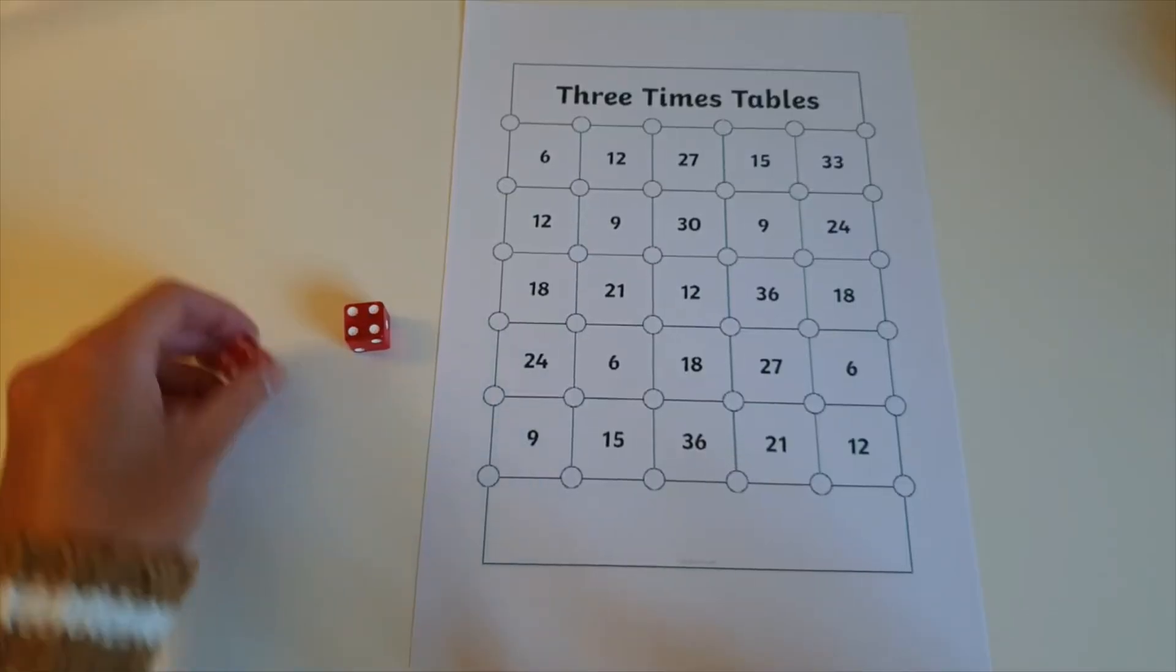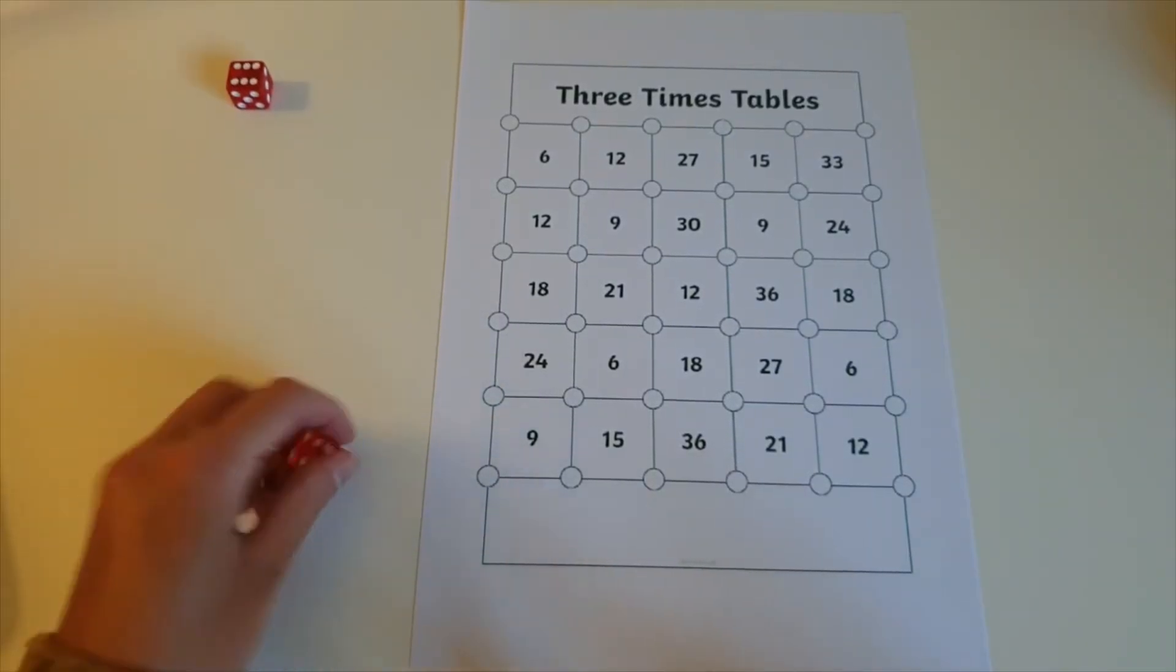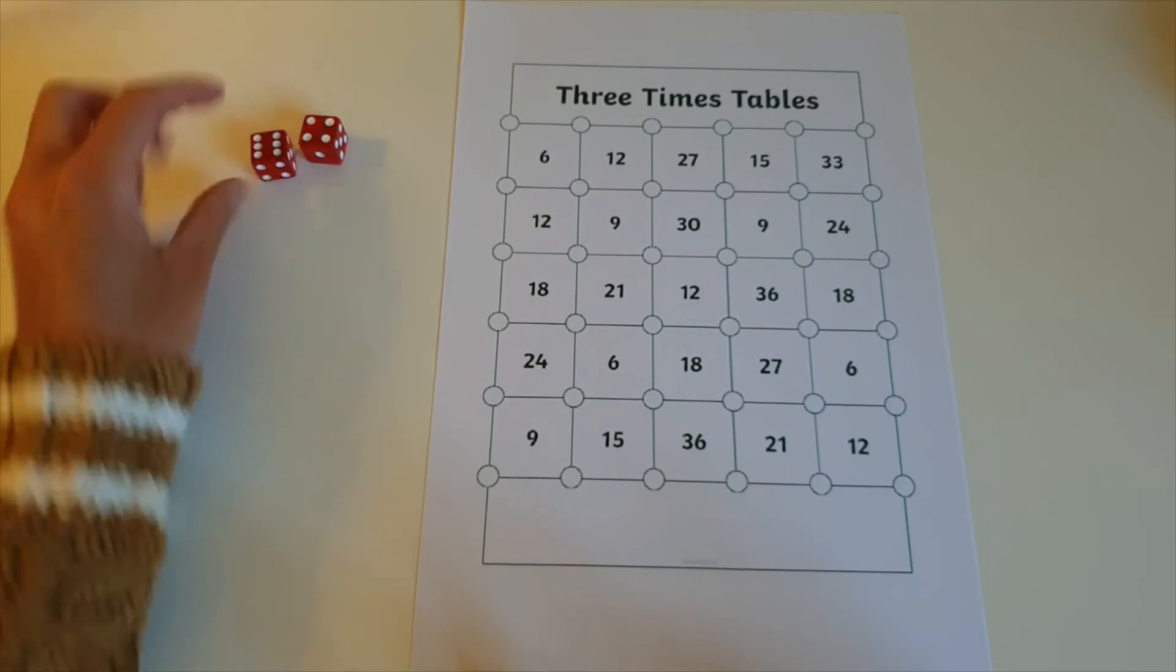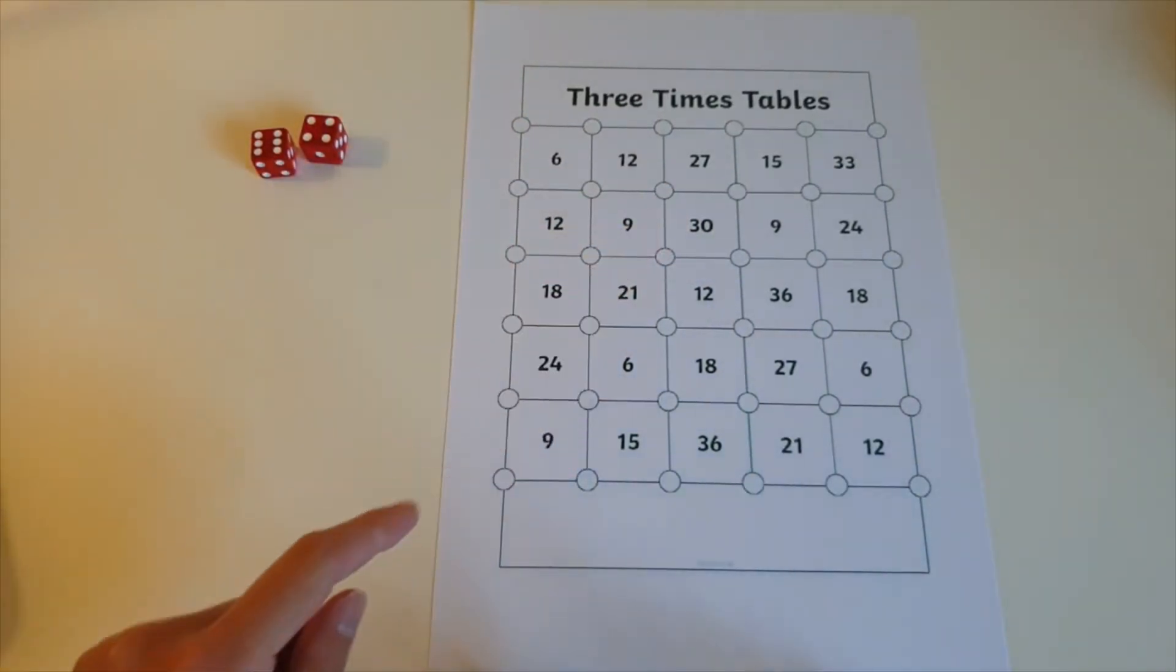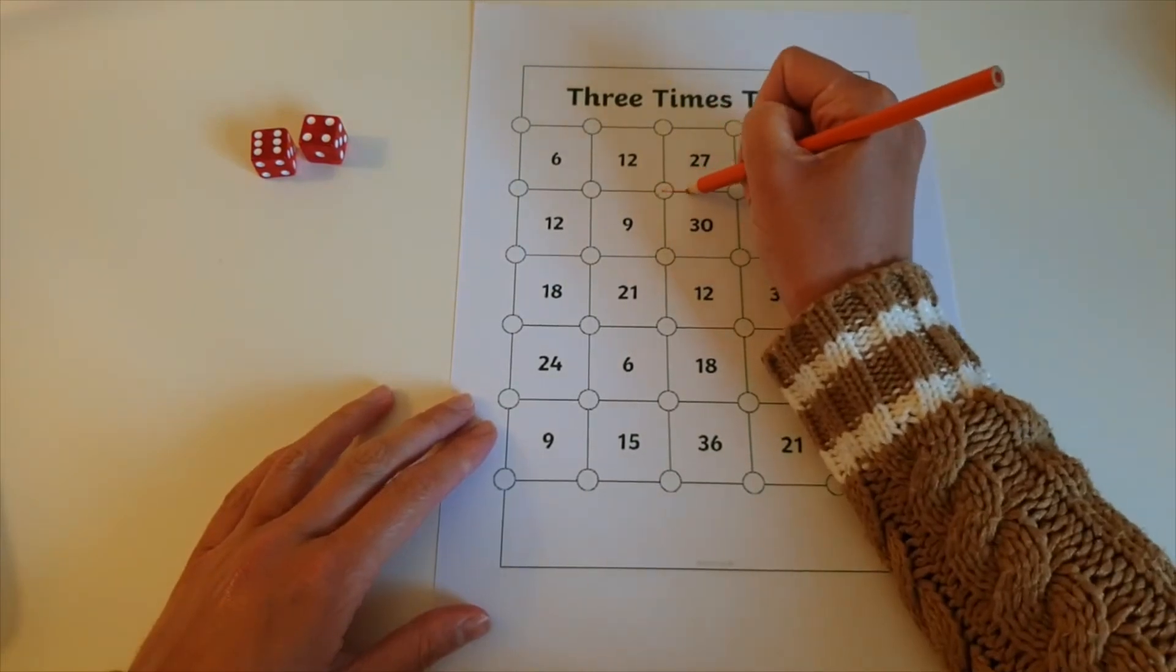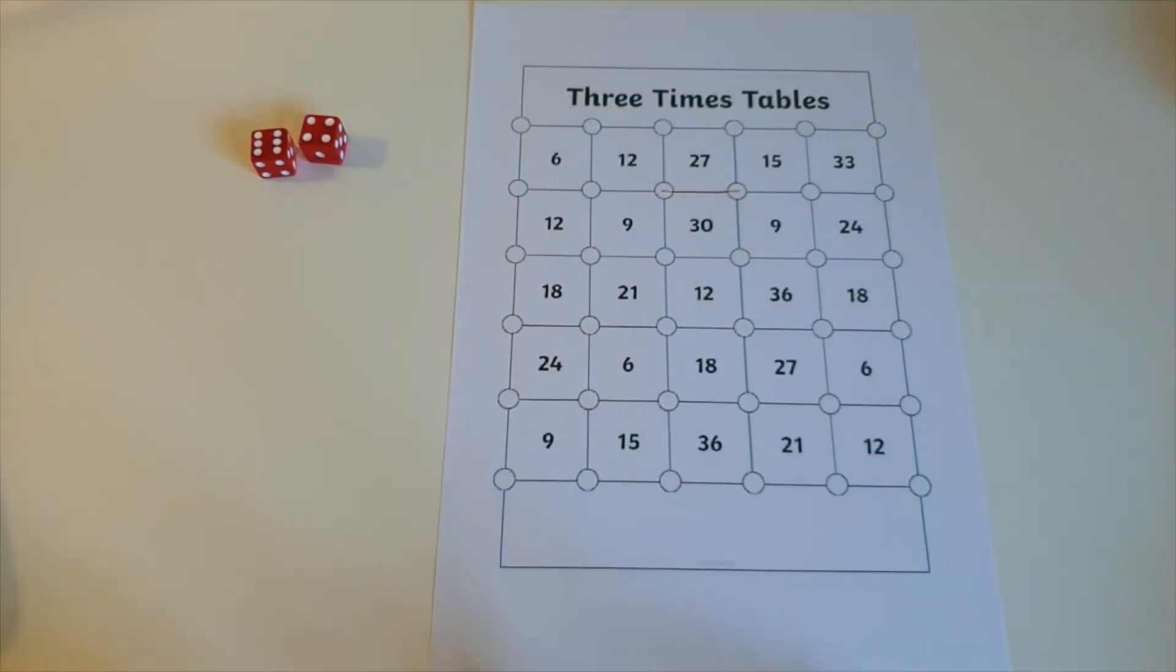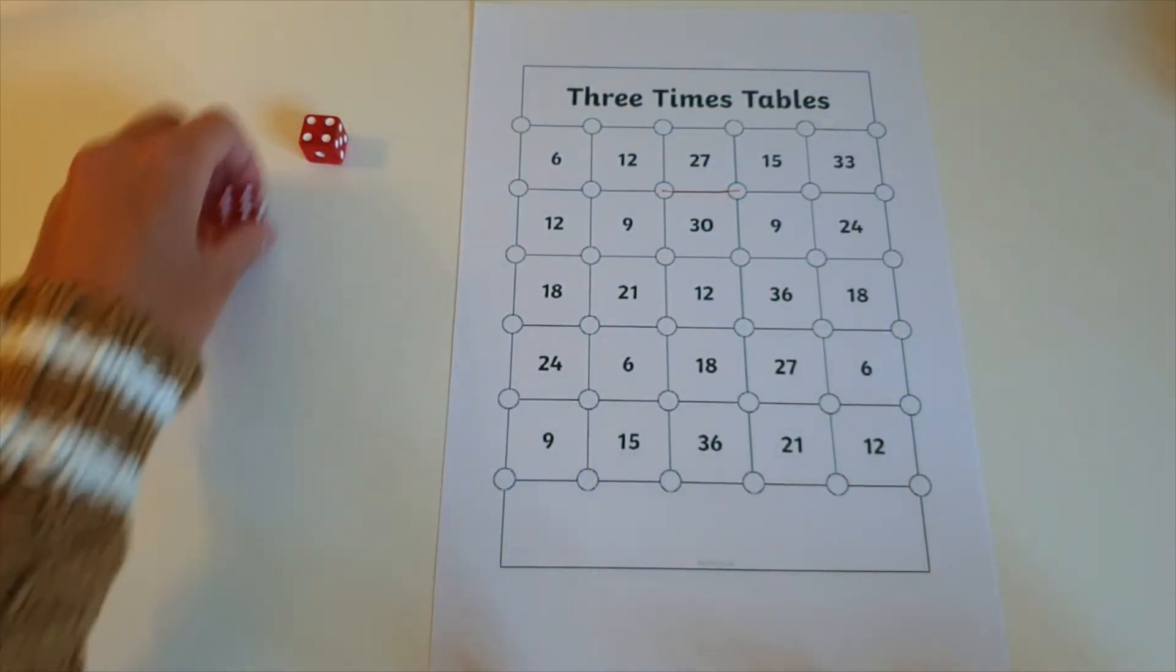To play this game children simply need to roll the dice, add the numbers together and multiply this number by the times table that is being practiced. Children then need to look for this number on the board and draw a line from one dot to another. The next player completes the steps and does the same.